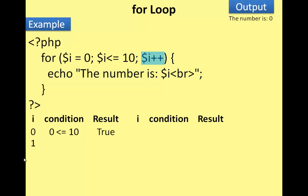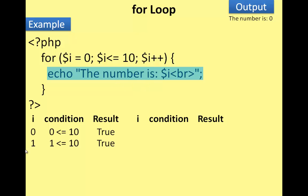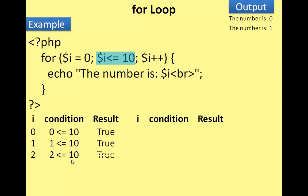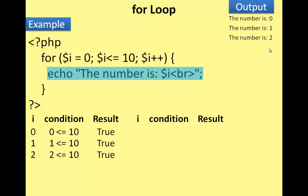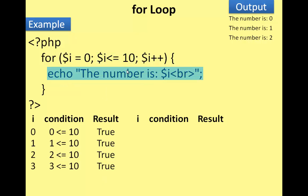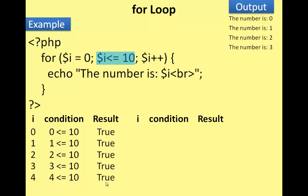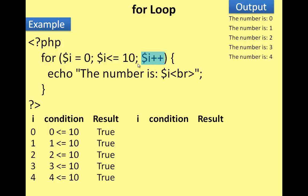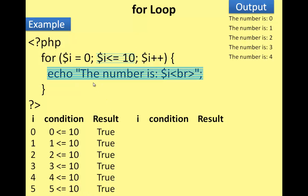The condition is checked: i less than or equal to 10 — true. Number 1 prints, then i increments to 2. 2 less than 10 — true, number 2 prints. i increments to 3 — condition true, number 3 prints. i increments to 4 — condition true. i increments to 5 — condition 5 less than or equal to 10 — true, number 5 prints. i increments to 6.